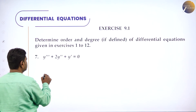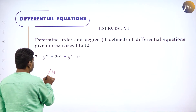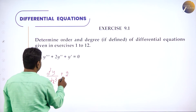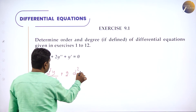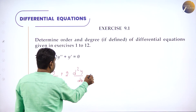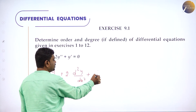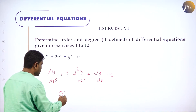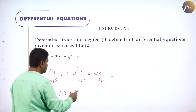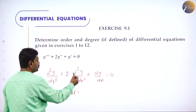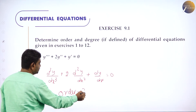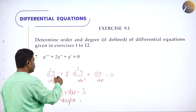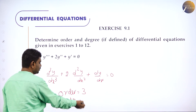Next problem: y''' + 2y'' + y' = 0, written as d³y/dx³ + 2·d²y/dx² + dy/dx = 0. Order: 3 times differentiated, 2 times, 1 time — maximum is 3, so order is 3. Degree: overall power of d³y/dx³ — no explicit power given, so power is 1. Degree is 1.